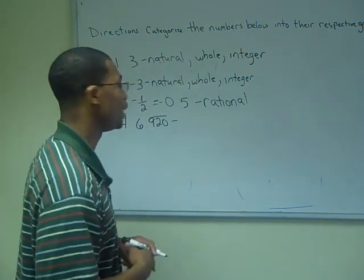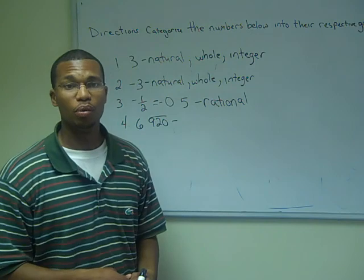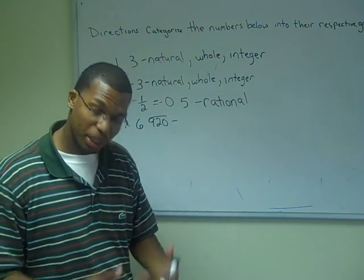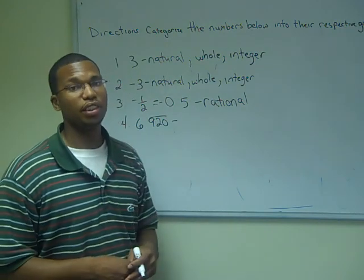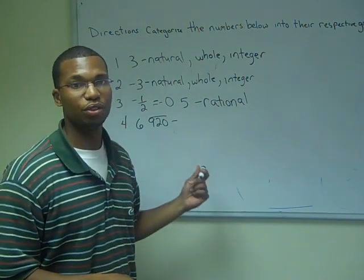This one is familiar — 6.920 with a bar over it. Well, based on the previous lesson, we know that this is a rational number.